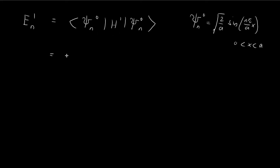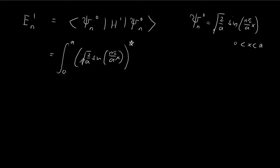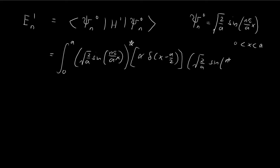In order to evaluate this expression, we have the integral from 0 to a. We have the n-th stationary state — square root of 2/a times sine(nπ/a · x) — and we take the conjugate, but it doesn't really matter because everything is real. Then we have H prime, the perturbation, which is just α·δ(x − a/2), and then the n-th stationary state again: square root of 2/a times sine(nπ/a · x) dx.